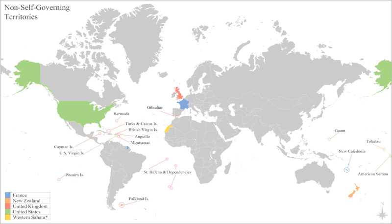Liberia was a colony set up in 1821 by American private citizens for the migration of free blacks. Its declaration of independence from the American Colonization Society came on July 26, 1847. It is the second oldest black republic in the world after Haiti. Macau was a Portuguese colony from 1557 to 1999. In 1999, two years after Hong Kong, it became a special administrative region of China.